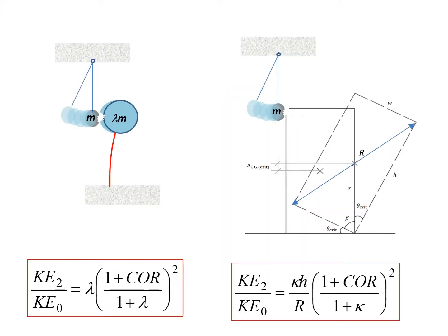Now let's compare the impact on a single degree of freedom system with that on an overturning rectangular block. You can see the similar expression for the kinetic energy ratios. Instead of having parameter lambda as arguments, we have introduced a new parameter kappa, which will be explained in the later slides.